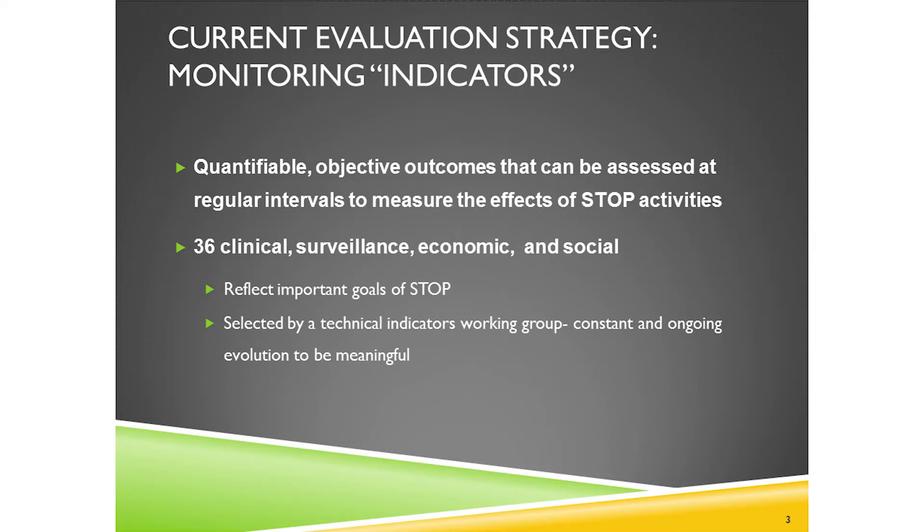The current strategy is that we've chosen a group of indicators to monitor. Indicators are quantifiable objective outcomes that we can track over time and measure at regular intervals to see how we're progressing. We have 36 indicators at the moment, about 20 of which we report on regularly with a quarterly monitoring and evaluation report. The indicators cover surveillance indicators, HIV testing data, economic indicators, social determinants, and clinical indicators including treatment outcomes.